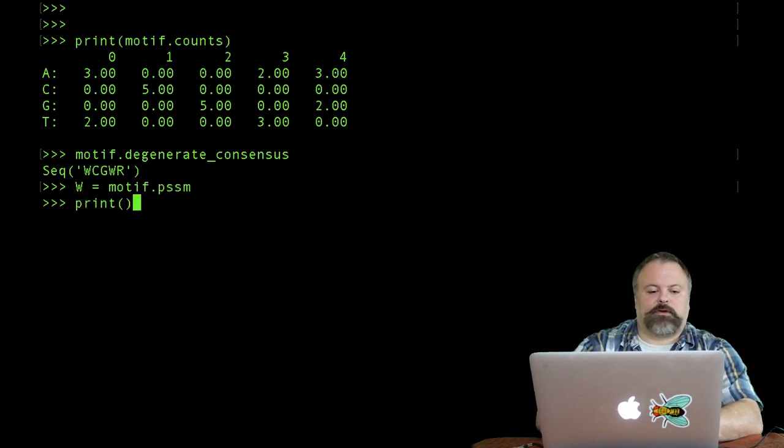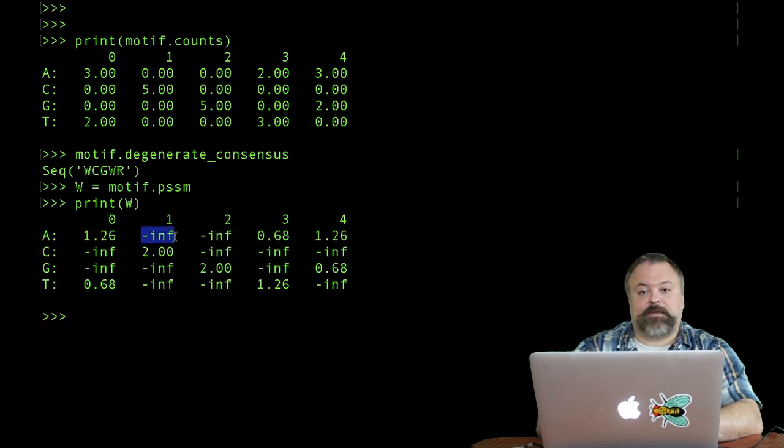You can define our position-specific scoring matrix as motif.pssm. We can print our PSSM here. You can see that there's negative infinite terms. These correspond to cases where our count matrix is zero because the log of zero is basically negative infinity or undefined.